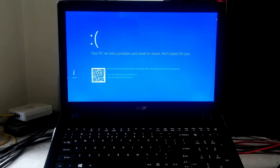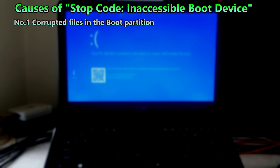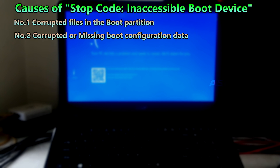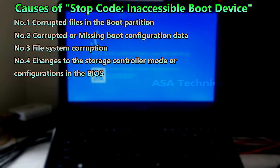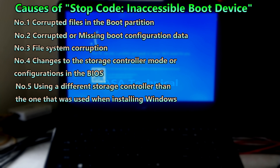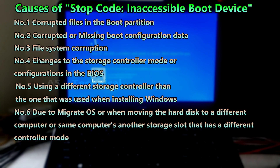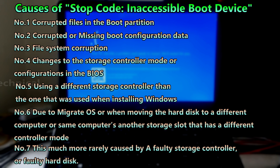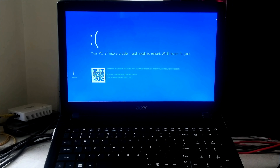Here I have mentioned some possible factors that might cause these errors: number one, corrupted files in the boot partition; number two, corrupted or missing boot configuration data; number three, file system corruption; number four, changes to the storage controller mode or configurations in the BIOS; number five, using a different storage controller than the one used when installing Windows; number six, migrating or moving the hard disk to a different computer or a different slot with a different controller mode; and number seven, more rarely, a faulty storage controller or faulty hard disk.